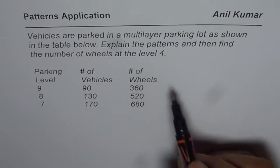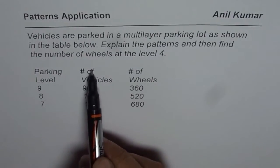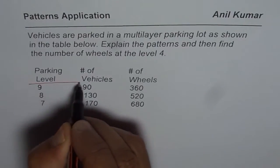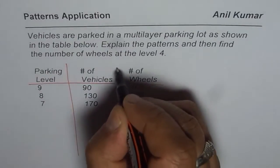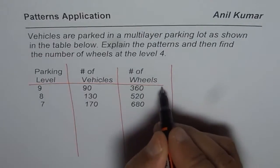Let's look into the table. We are given three different columns: parking level, number of vehicles, and number of wheels. These are our columns.